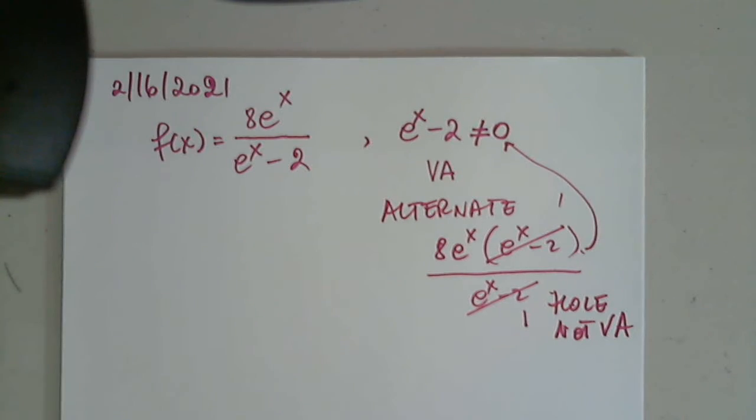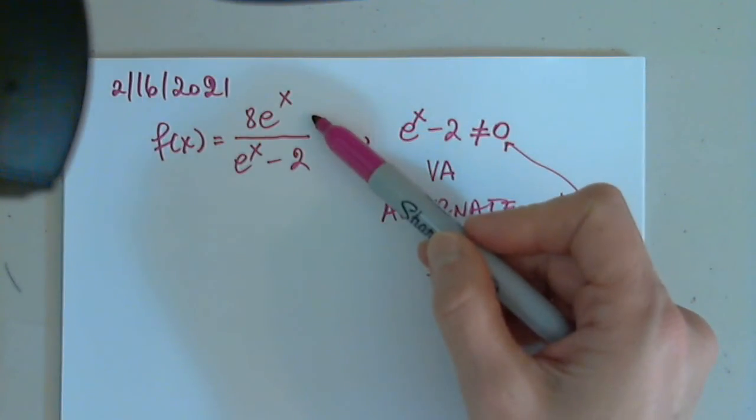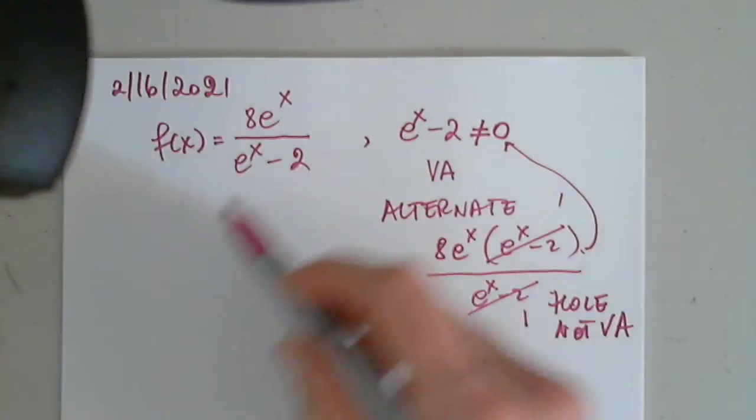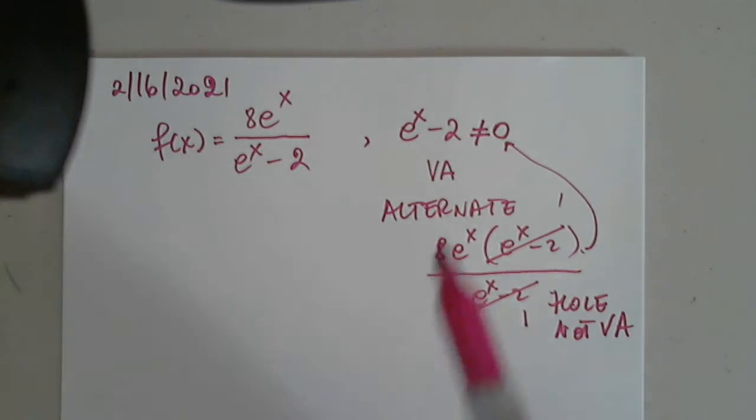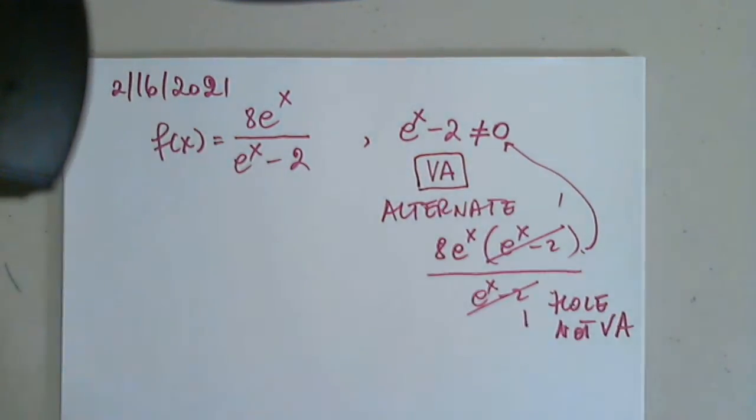But obviously this is not the case here. This function does not have an e to the x minus 2 factor in the numerator, so I cannot simplify it. So if this equation has solutions, the solutions will create vertical asymptotes.